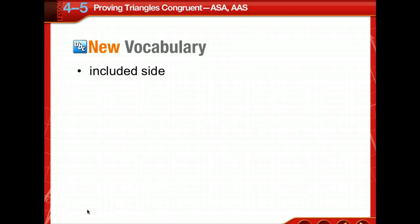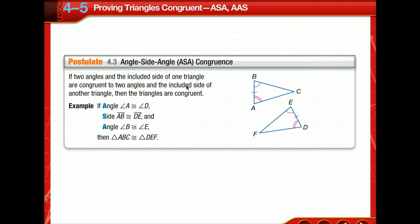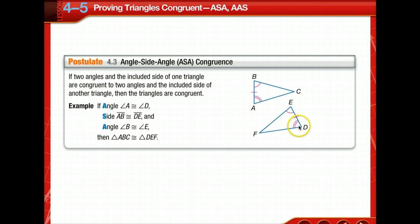We've had included angle before. Now notice, because the side is in between, we've got an included side. An included side is the side located between two consecutive angles of a polygon. The angle-side-angle congruence postulate says that if two angles and the included side of one triangle are congruent to two angles and the included side of another triangle, then the triangles are congruent.